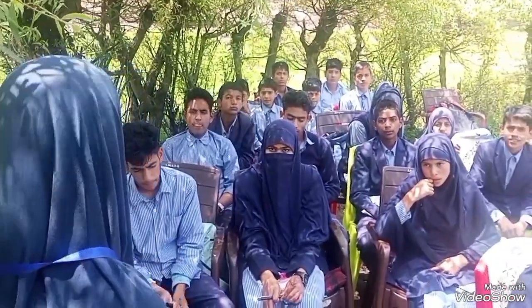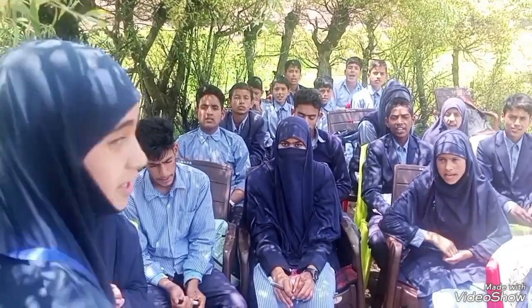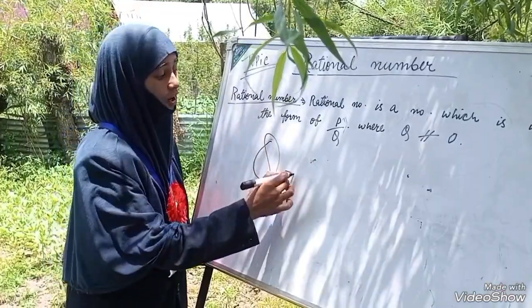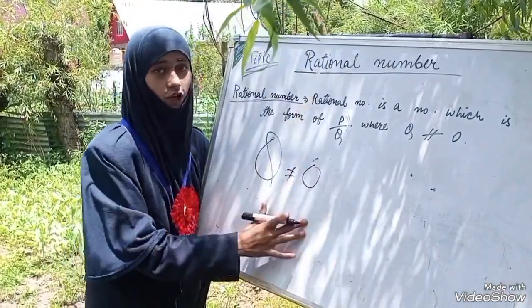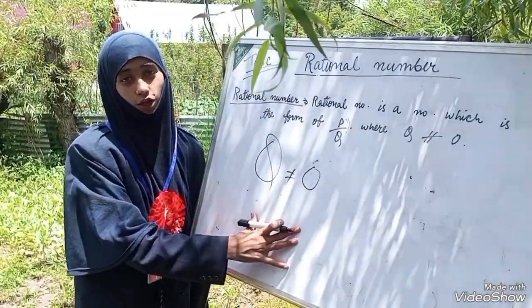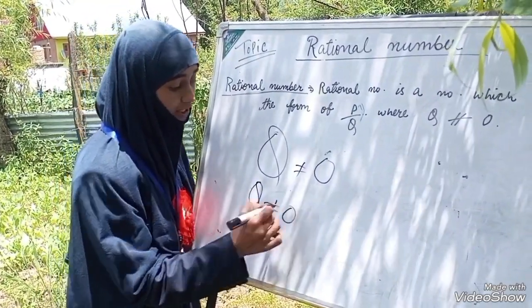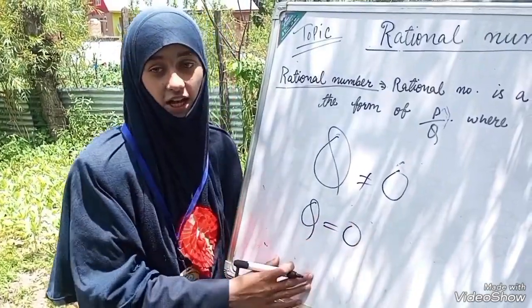Now, have you understood what a rational number is? Yes! A rational number is a number which is in the form of p by q, where q is not equal to zero. Why is q not equal to zero? If q is zero, then it is not a rational number.